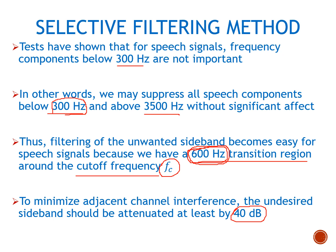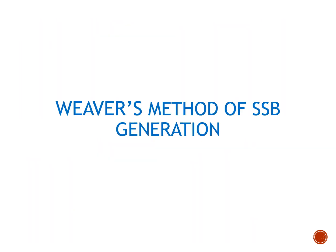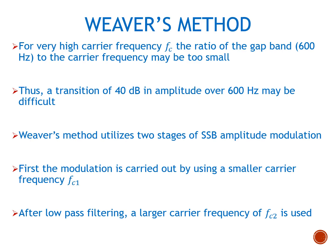The selective filtering method is quite simple and can be implemented using just a simple filter. The next method is Weaver's method of single sideband generation. We need this method because if we have a high frequency carrier FC, the ratio of the band gap — 600 Hz as discussed — to the carrier frequency may be very small. Designing such a filter is generally quite difficult, putting a stringent requirement on the filter design.